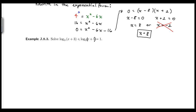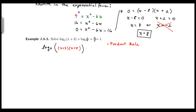Looking at the last example: log base 3 of x plus 3, plus log base 3 of x plus 5, equals 1. Again I see a sum of two logs on the left side, so I'll use the product rule to combine them into one log.